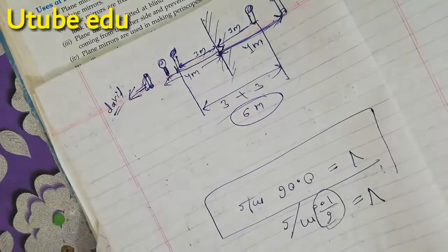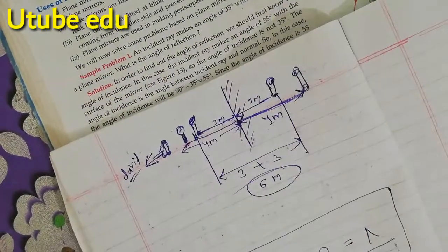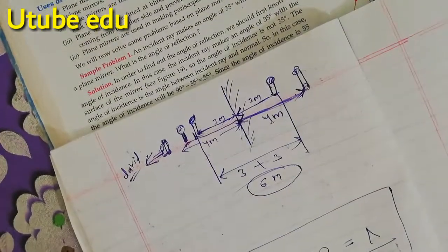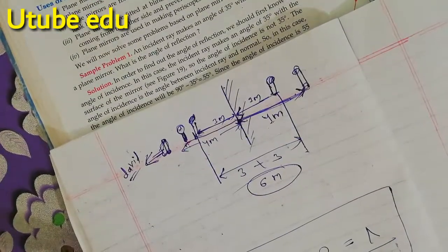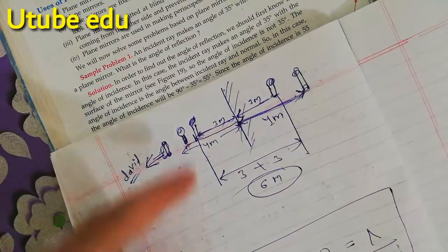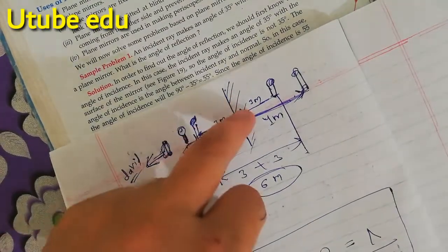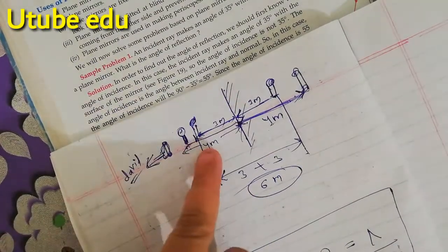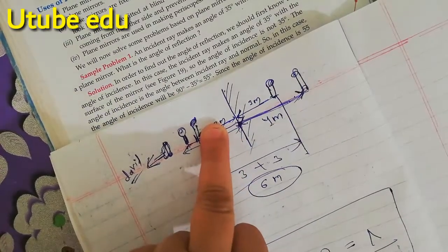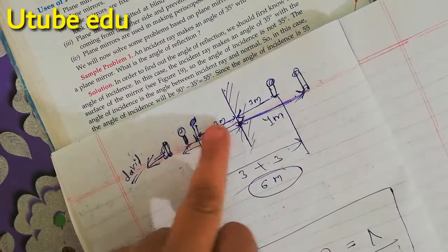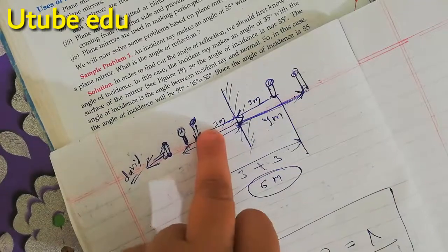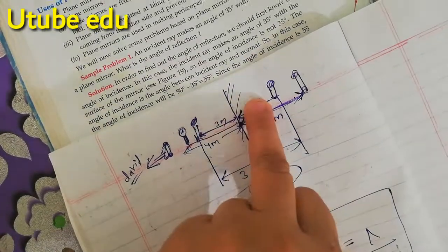So looking at this question, we applied the plane mirror property. The answer is 6 meters. If David had moved 2 meters towards the mirror, he would be 2 meters away, and the image would also be 2 meters — giving a total distance of 4 meters.